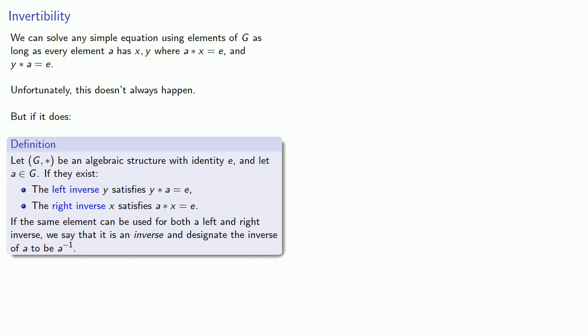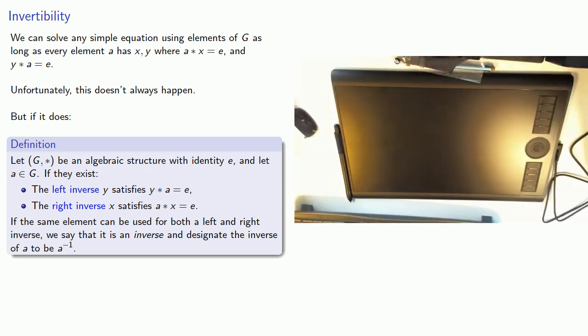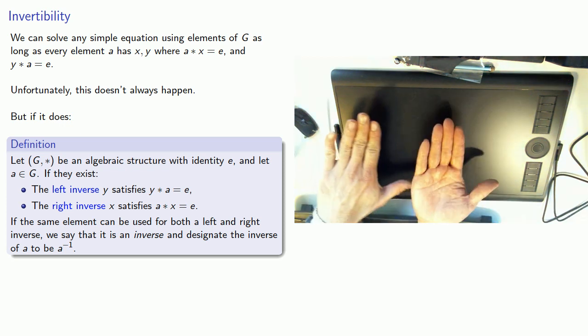Let G-star be an algebraic structure with identity E, and let A be some element of G, if they exist. The left-inverse Y satisfies Y-star A equals the identity, while the right-inverse X satisfies A-star X equals the identity. The hardest thing to remember about the left and the right-inverse is that the left-inverse only works if it's on the left side. And that should be obvious, but you do have to remember which side is the left, and so the easiest way to remember that is to hold out your hands. Your left hand is the one that forms the L.